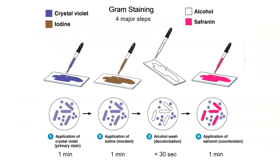The general timing is: one minute for the primary stain, one minute for the iodine, less than 30 seconds for decolorization, and one minute for the counter stain. Watch the video — it shows you exactly how to do this.